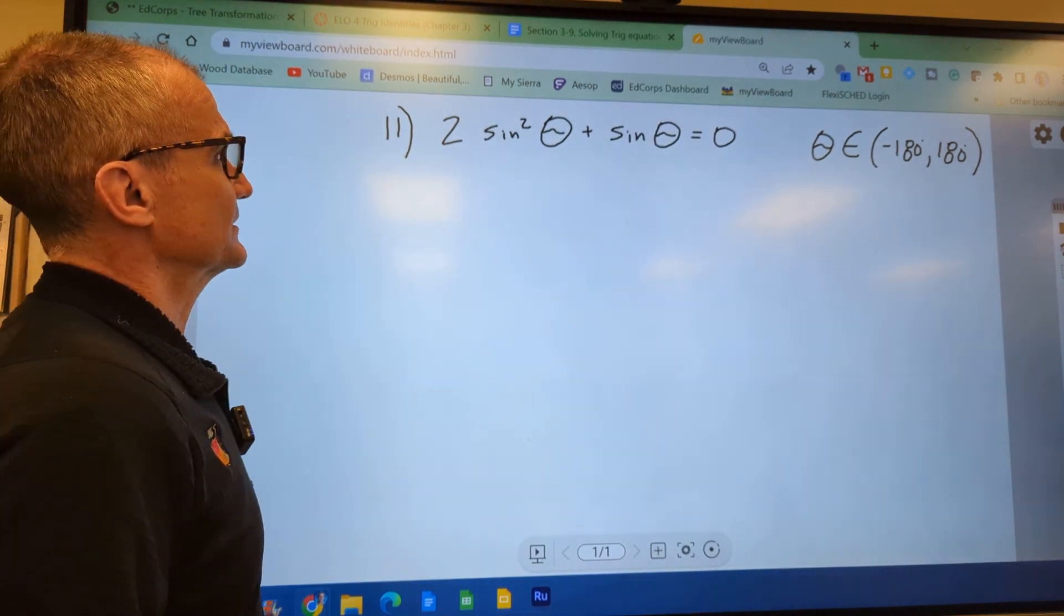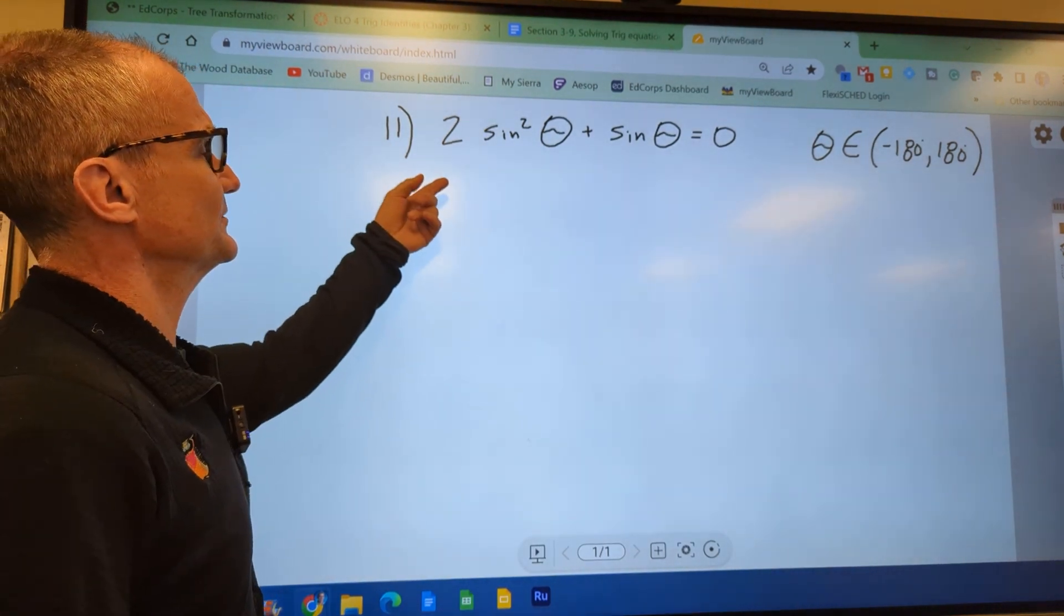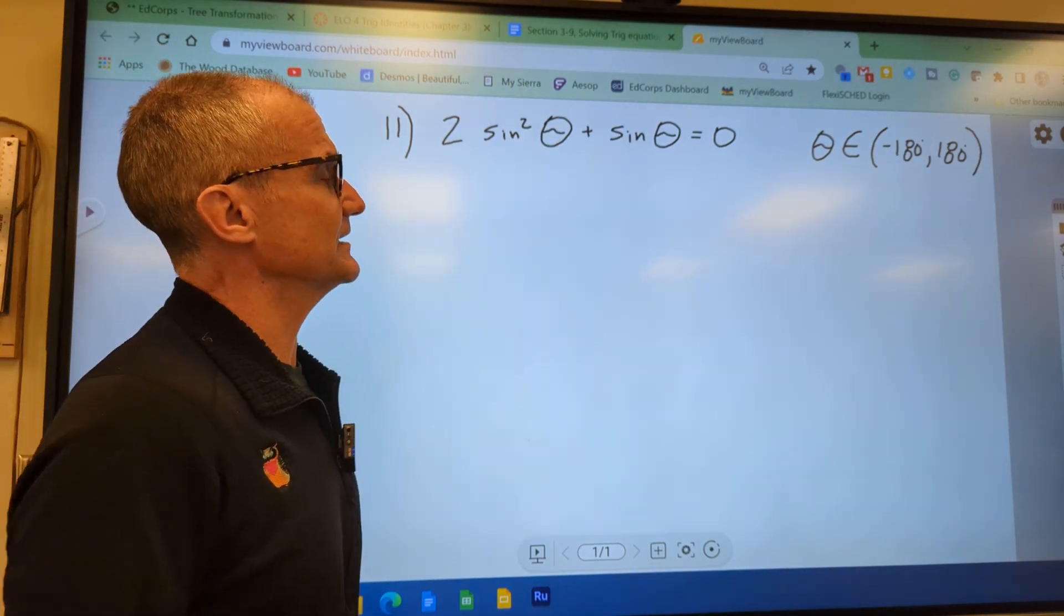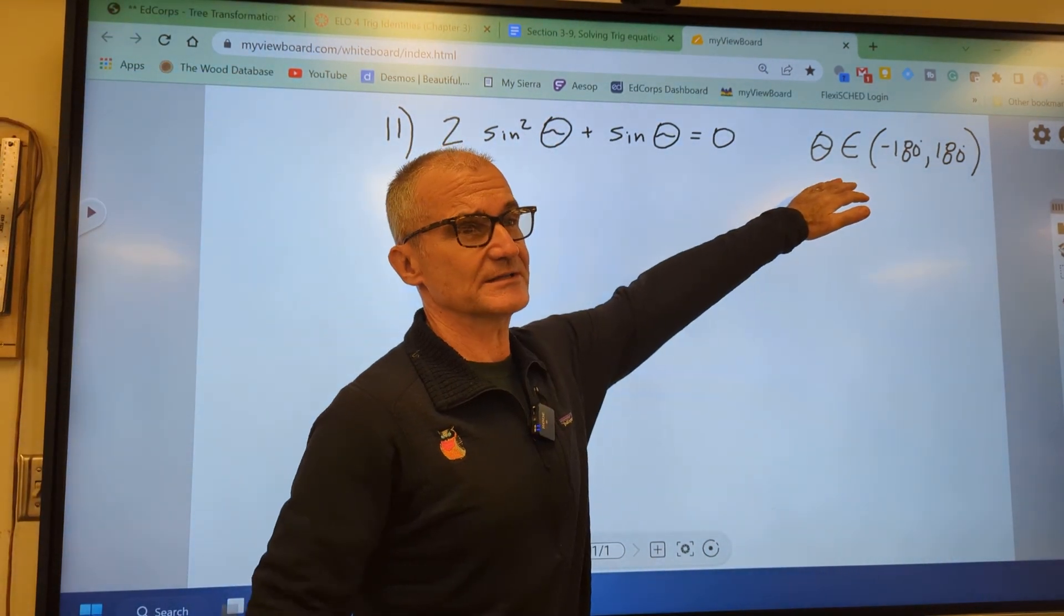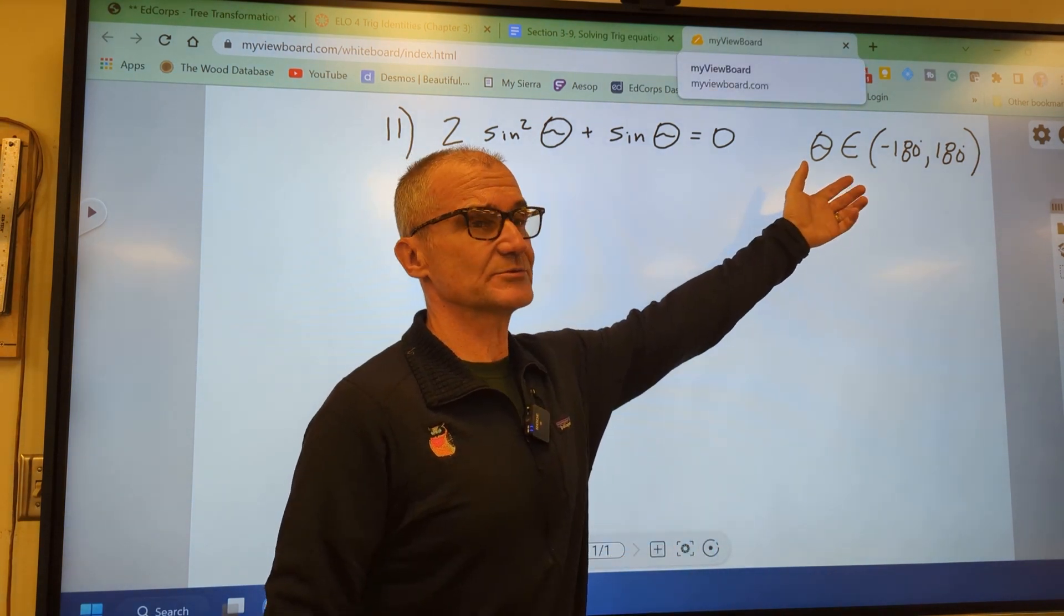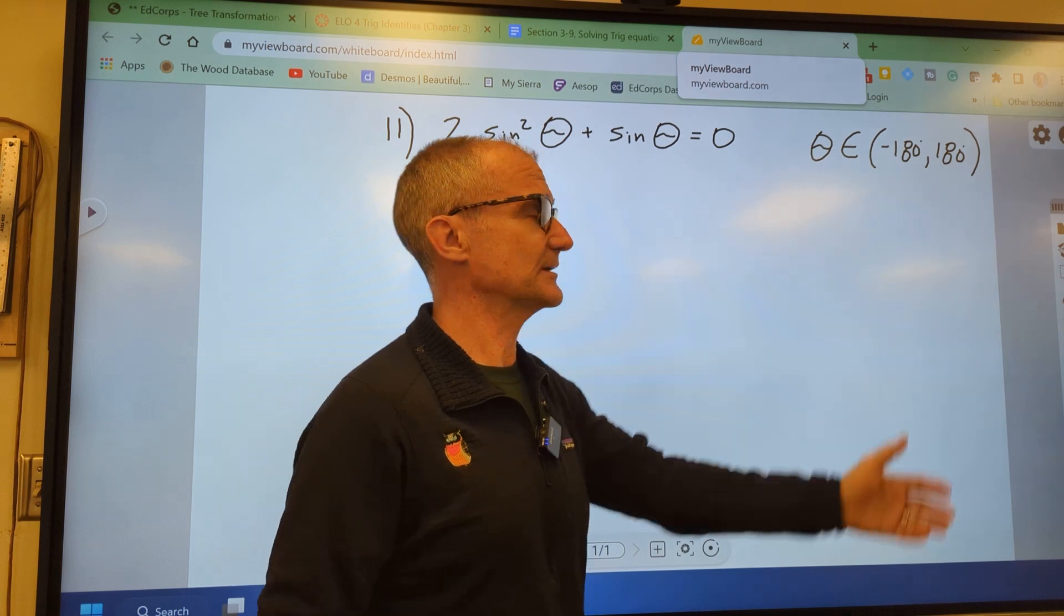Here's a problem on solving trig equations. We have a singular argument, sine of theta squared, and then sine of theta. And then this is a domain. It's saying the answers are not going to be an infinite series of solutions. We're only going to take the ones inside that window.